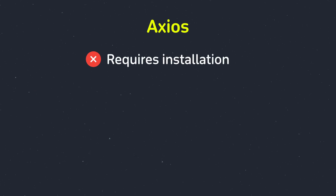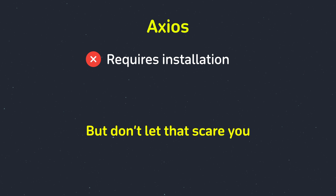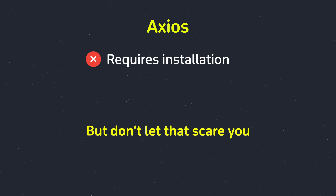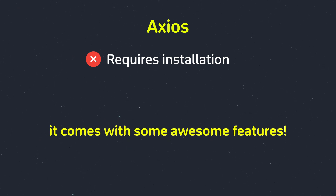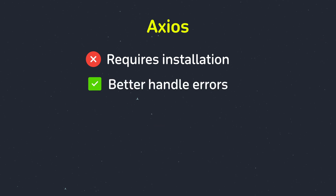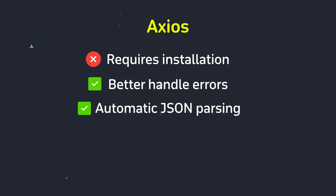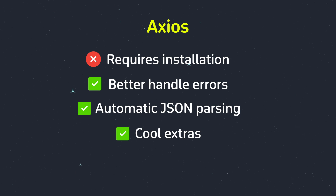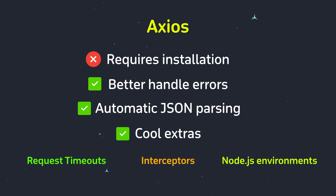Now let's talk about axios. Axios is a third-party library, which means you need to install it before using it. But don't let that scare you — it's super easy to set up, and it comes with some awesome features. Axios can handle errors automatically, convert responses to JSON automatically, and it supports features like request timeouts, interceptors, and also works in a Node.js environment.